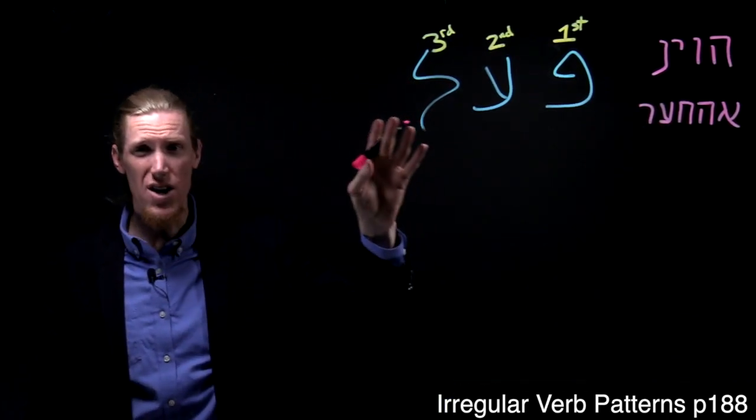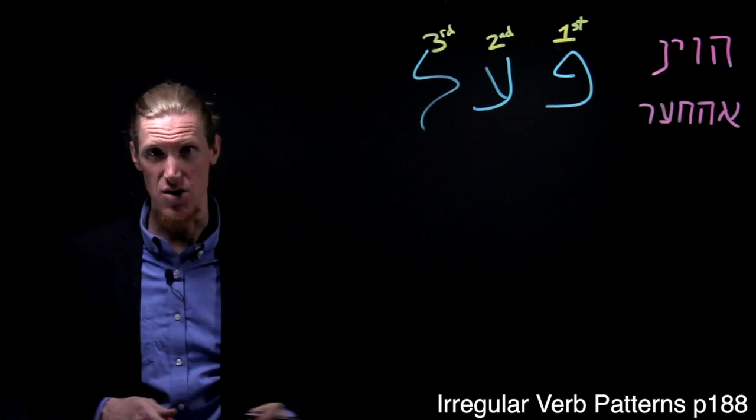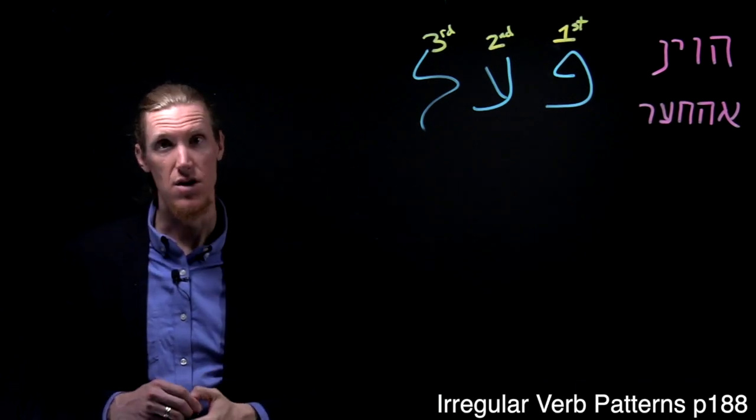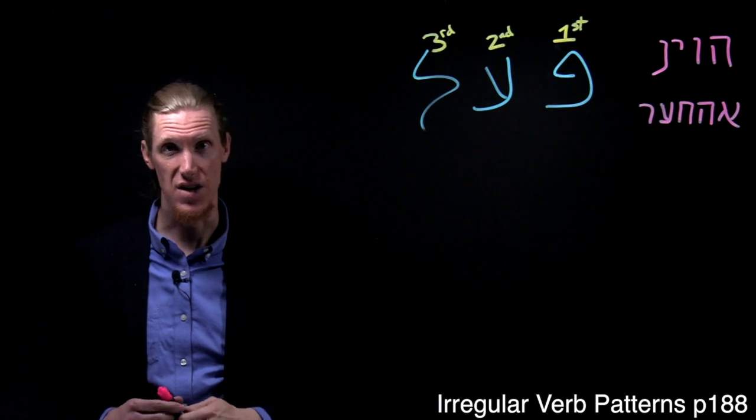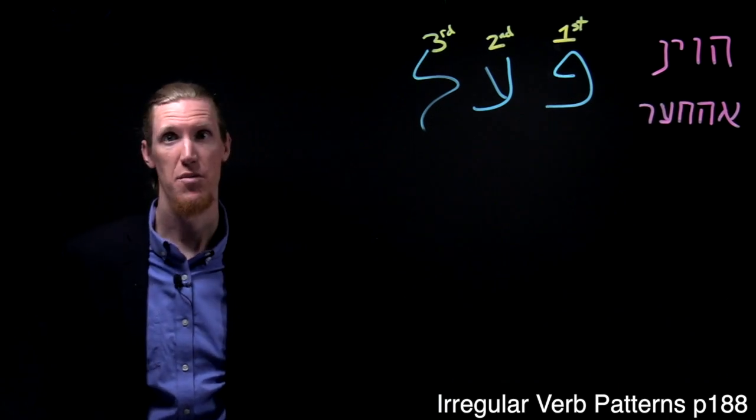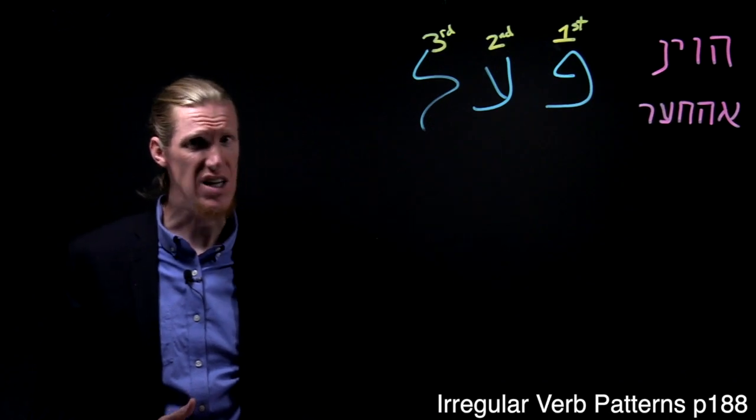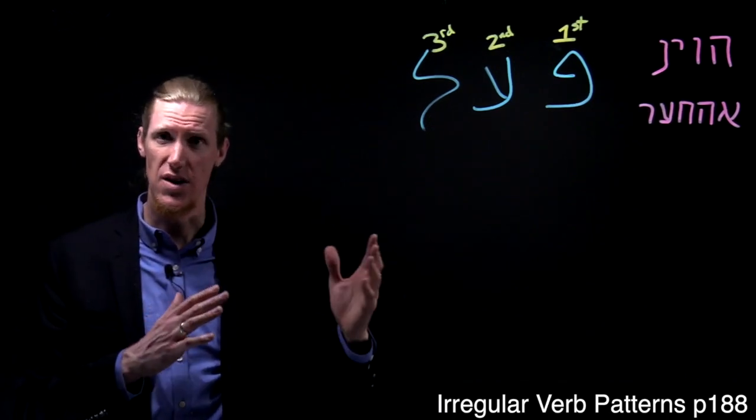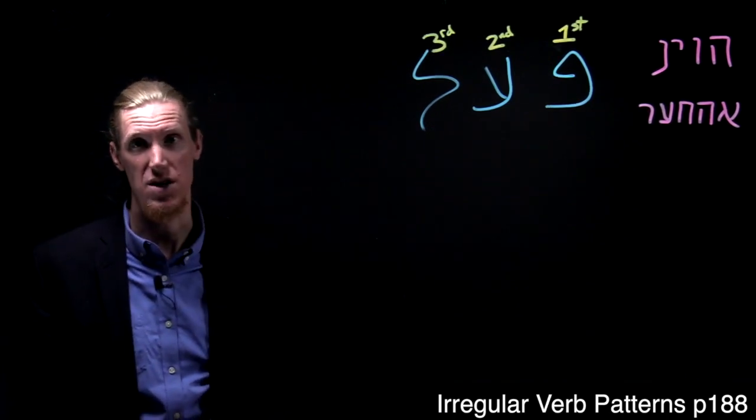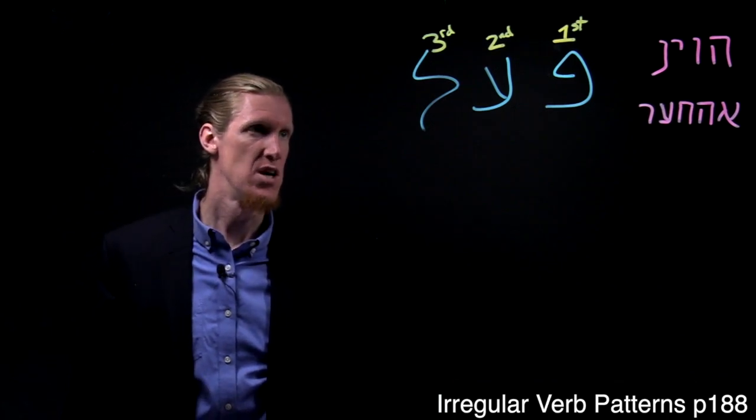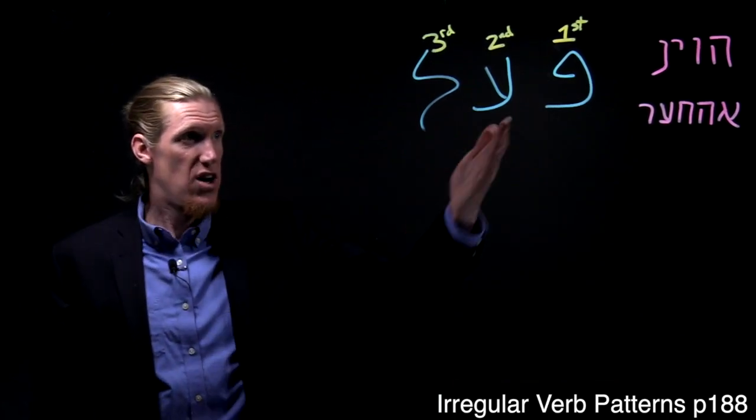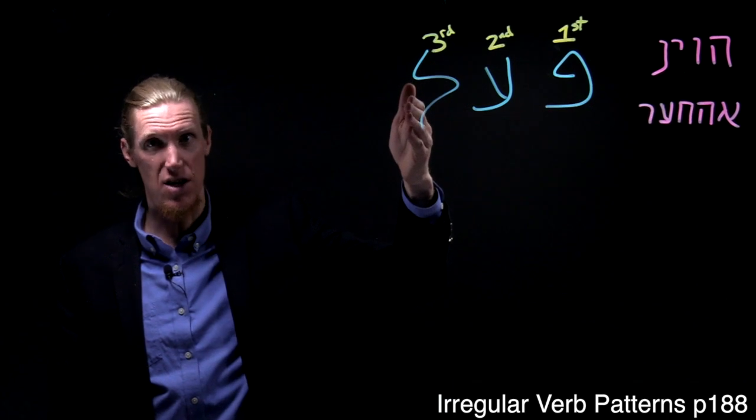If one of those letters gets in your three-letter root, you'll most likely have an irregular verb pattern or verb form. Now, there are patterns that you can use to identify what those are and figure out what the missing root letter is, for instance. And that's where Pei, Ain, and Lamed come in.